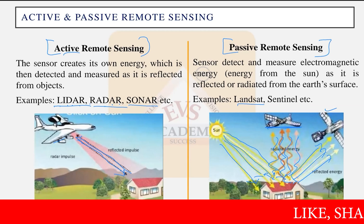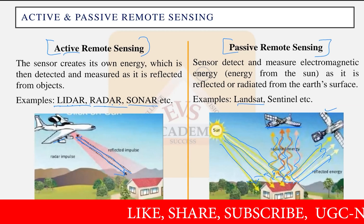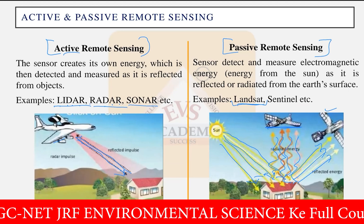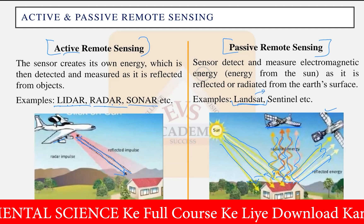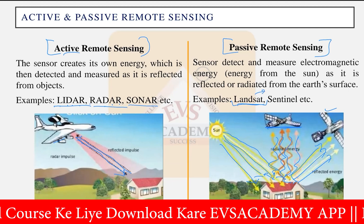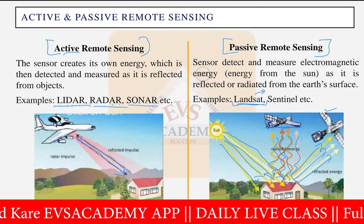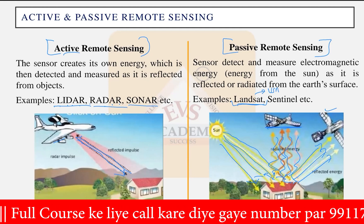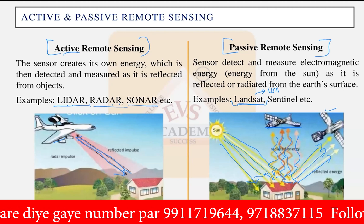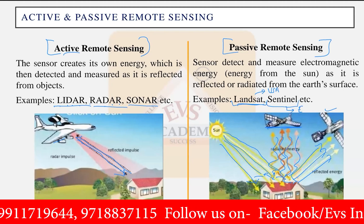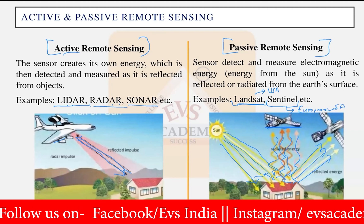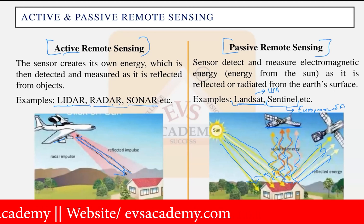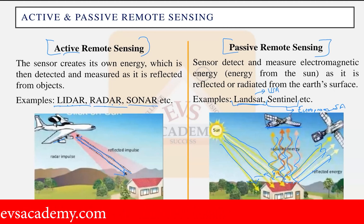Landsat is owned by USGS — the United States Geological Survey — which developed the satellite series and provides data worldwide. Similarly, we have Sentinel satellites, which belong to the European Space Agency (ESA). There are two popular Sentinel satellites: Sentinel-1 and Sentinel-2, both providing continuous images of the earth's surface. These are also types of passive remote sensing using reflected solar energy detected by the satellites.